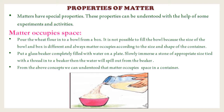Observe the image shown: pour wheat flour into a bowl from a box. It is not possible to fill the bowl because the size of the bowl and box is different, and matter always occupies space according to the size and shape of the container. Next activity: put a glass beaker completely filled with water on a plate, slowly immerse a stone tied with a thread into the beaker, and the water will spill out. By these activities we can understand that matter occupies space in a container.